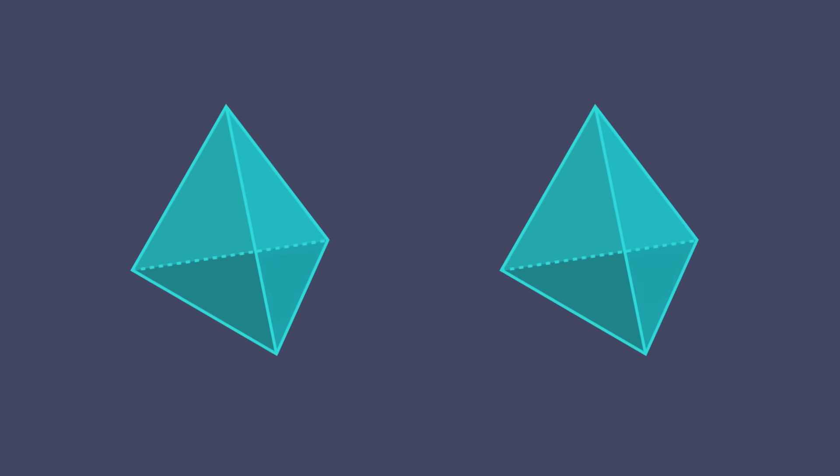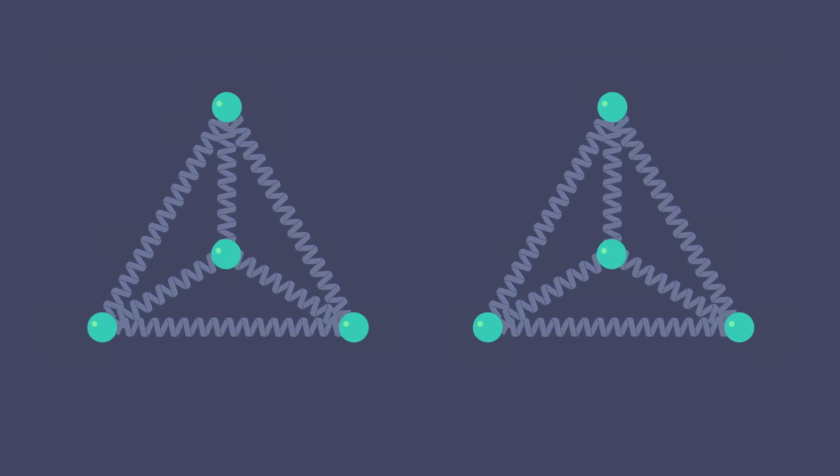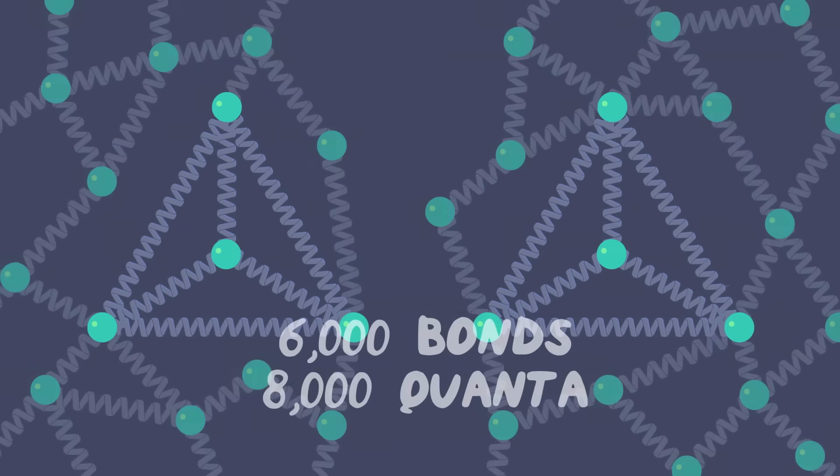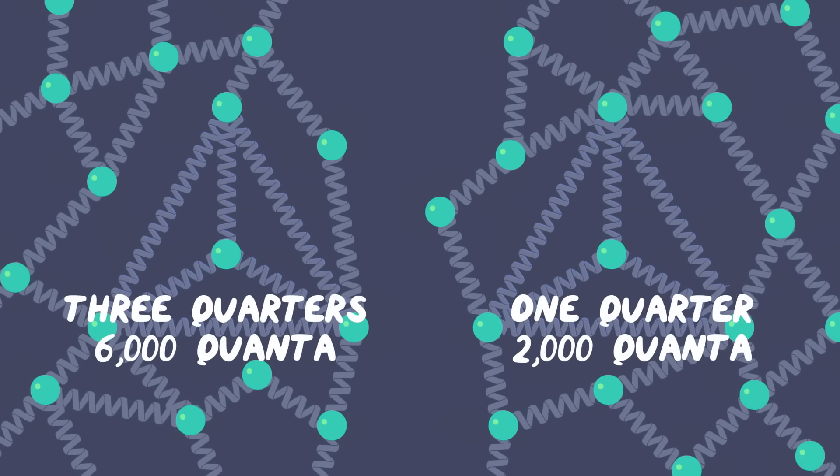It's all about the size of the system. Our hypothetical solids only had six bonds each. Let's scale the solids up to 6,000 bonds and 8,000 units of energy, and again start the system with three quarters of the energy in A and one quarter in B.